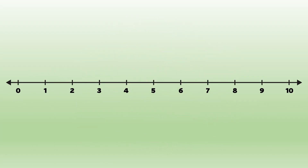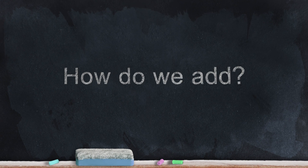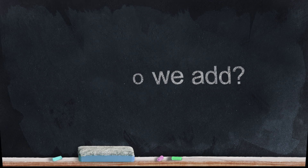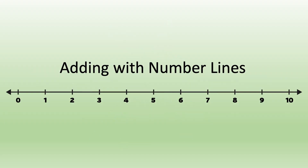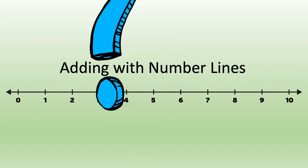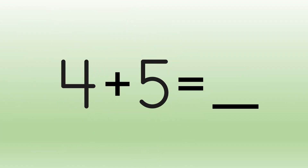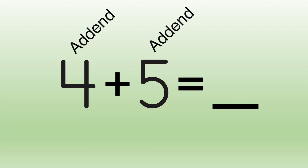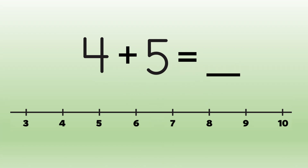We usually use the part of a number line that will help us the most. Now that we know what a number line looks like, how can we use it to add? First, we'll need a number sentence to complete. How about four plus five equals blank. When we add, we look at our first addend and find it on the number line. Our first addend is four, so we find four on the number line. Here's four.